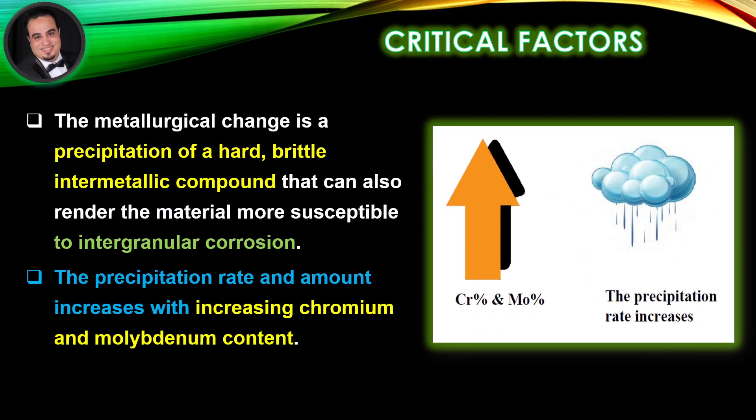The metallurgical change is a precipitation of a hard, brittle intermetallic compound that can also render the material more susceptible to intergranular corrosion. The precipitation rate and amount increases with increasing chromium and molybdenum content.